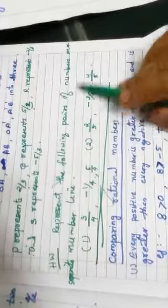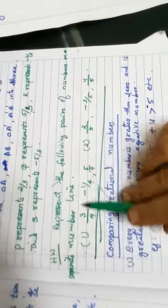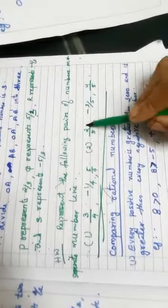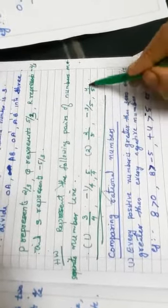Homework. Represent the following pairs of numbers. Separate number line. First one, 3 by 4, minus 1 by 4, 5 by 4. Second one, 2 by 5, minus 3 by 5 and 4 by 5.